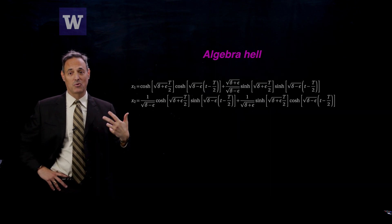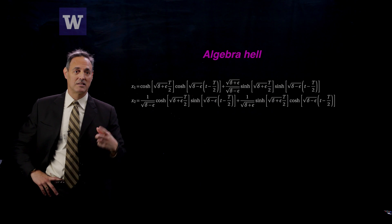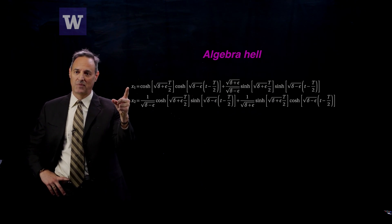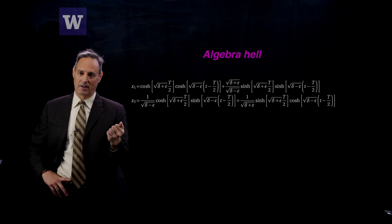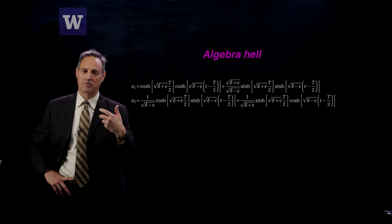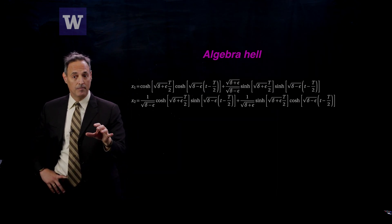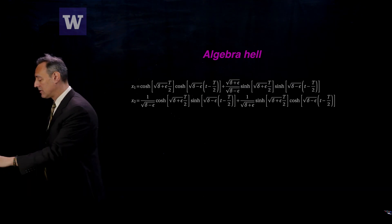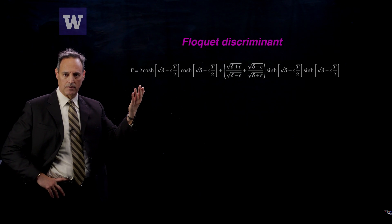And what I need to do then is take x1, evaluate it at capital T, I need to take the derivative of x2 and evaluate it at capital T. So even more algebra comes up, which is I have to do those calculations, evaluate them. Once I have them, I add them together to form my Floquet discriminant, and there is the Floquet discriminant.